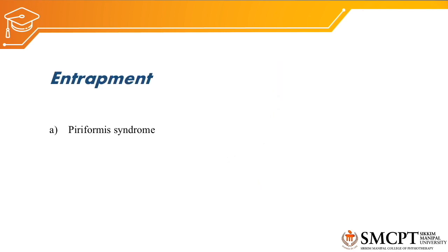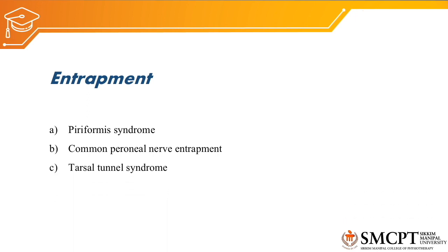If the sciatic nerve or its branches are compressed or entrapped, this is called entrapment syndrome. There are three types of entrapment syndrome for the sciatic nerve: piriformis syndrome, common peroneal nerve syndrome, and tarsal tunnel syndrome.